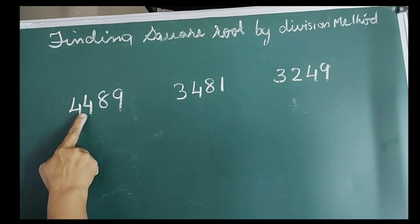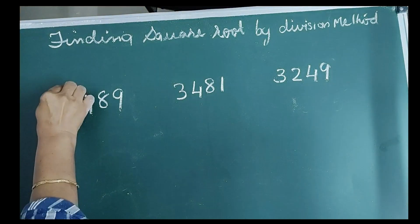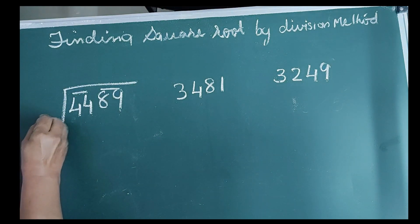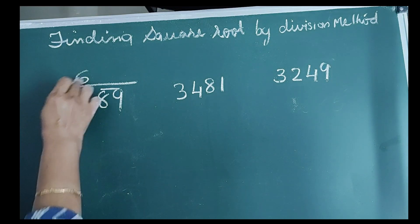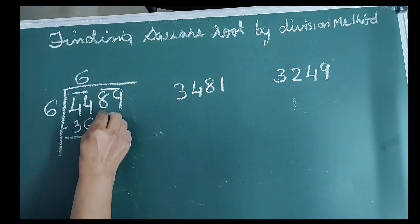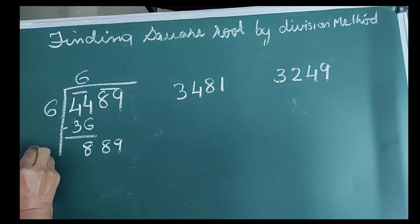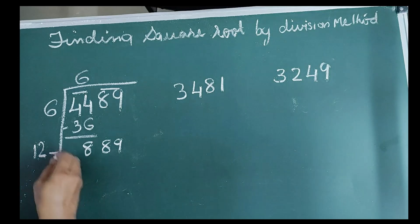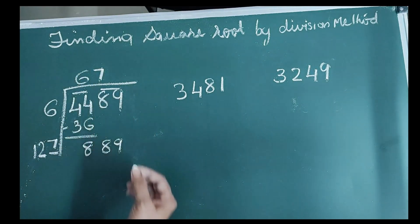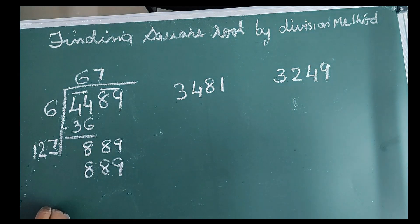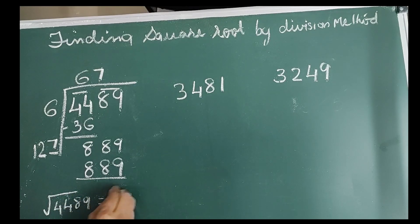Next number is 4,489. Following the same steps, the number under the leftmost bar gives divisor and quotient as 6. 6 times 6 is 36, remainder is 8. Bring down the next bar 89, making the new dividend 889. Double the quotient: 6 times 2 is 12, with a blank. Guess digit 7, quotient also 7. 7 into 127 is 889. Therefore, square root of 4,489 is equal to 67.